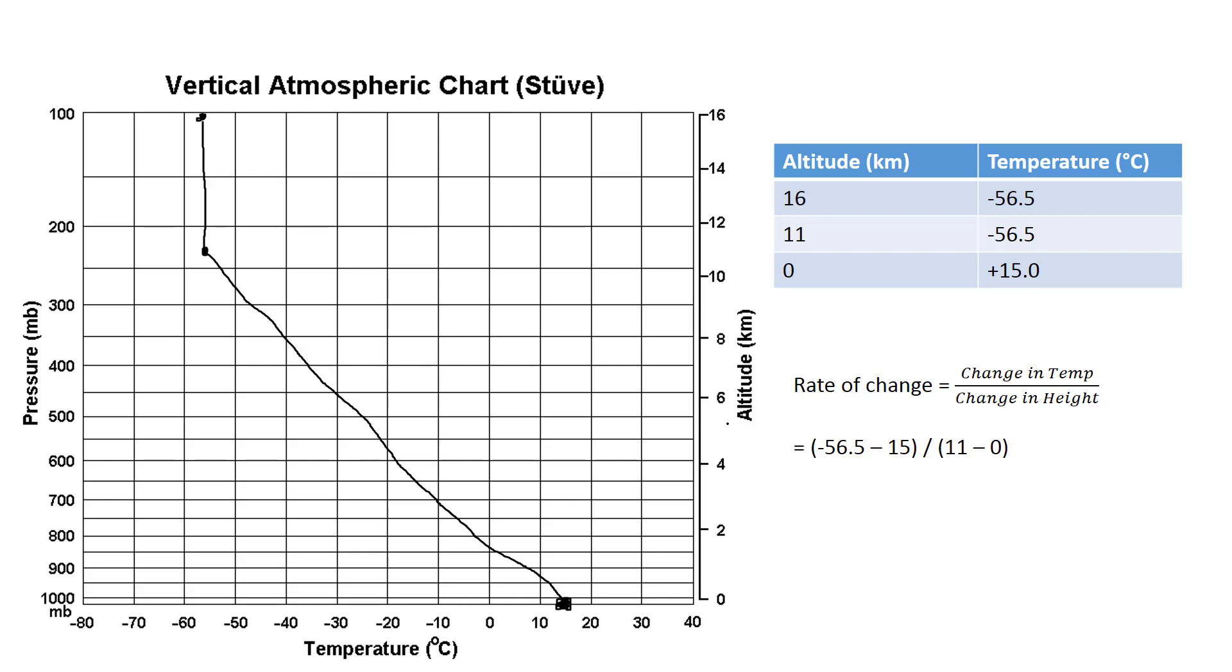Now, this particular temperature profile is actually a very special temperature profile. This is what's called the U.S. standard atmosphere. This is basically the baseline, the average, that meteorologists use to determine, okay, do we have warmer than normal temperatures higher up? Do we have colder than normal temperatures higher up? So this is kind of our baseline. This is what would be considered normal.